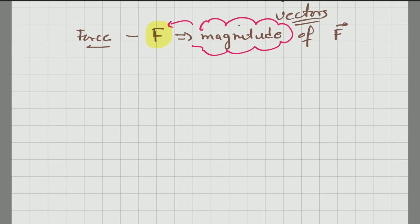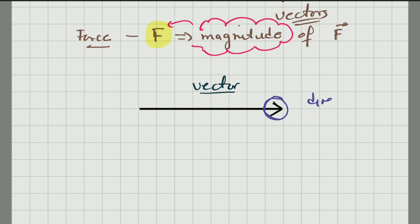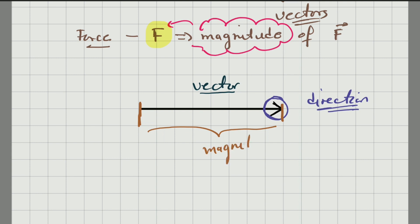Let's see how we represent vectors graphically. Vectors are going to be represented graphically with an arrow. The head of the arrow indicates the direction of the vector, and the length of the arrow — from the tail to the point of the head — represents the magnitude of the vector. This side here is called the tail of the vector, so the length from the tail to the head represents the magnitude of that specific vector.